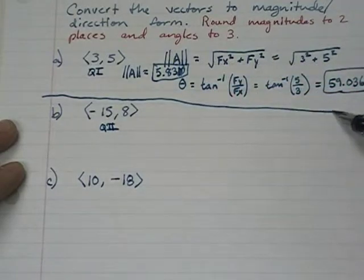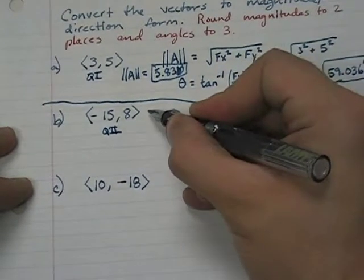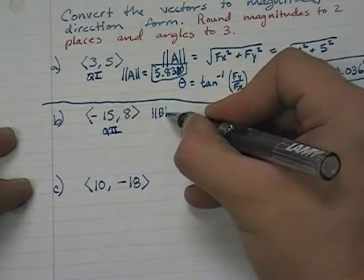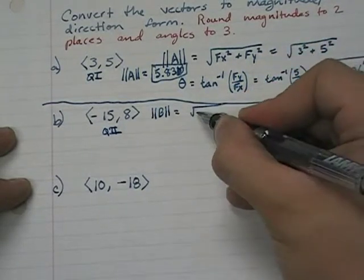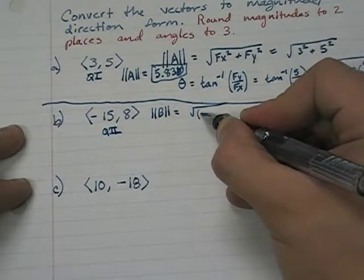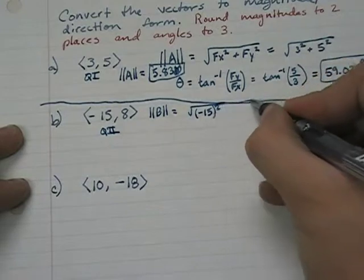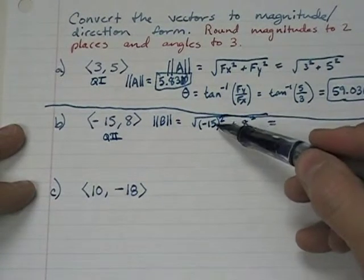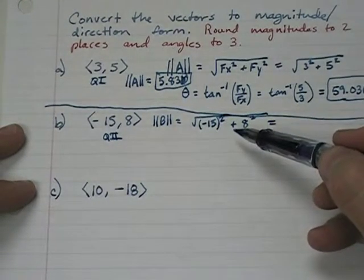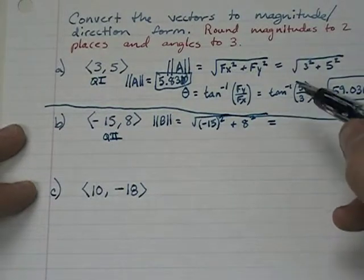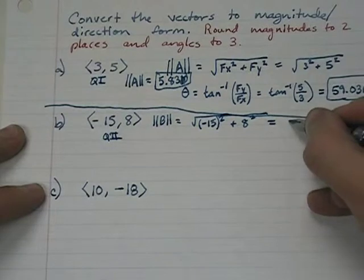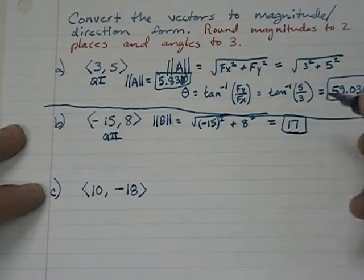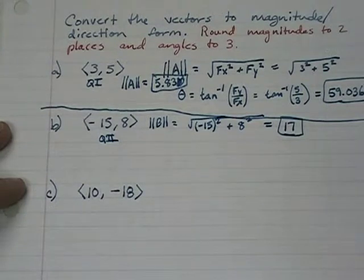In part b, we're going to start with magnitude. The magnitude of vector b is going to be the square root of the x component, negative 15, squared, plus the y component, 8, squared. If I square negative 15, and then I square 8, add them together, then take the square root, I get a magnitude of 17.